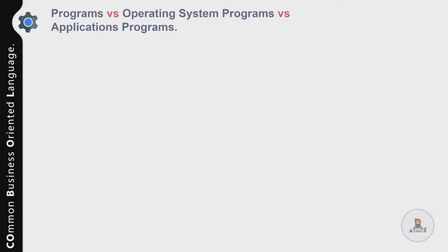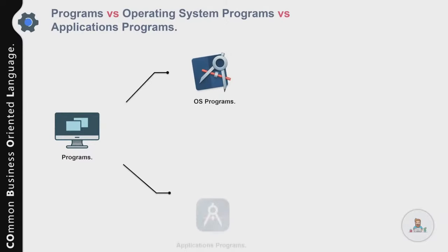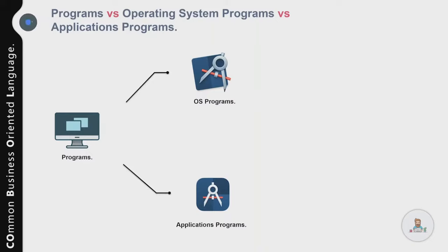Now let's understand the basic difference between three important terms we'll be using interchangeably throughout the course: program, operating system program, and application program. A program is a set of instructions that enable a computer to process data. You can use various high-level languages to write these programs — dotnet, Java, C, C++, or COBOL.